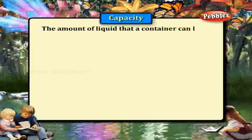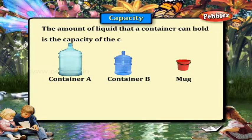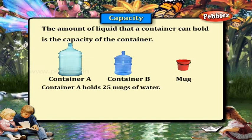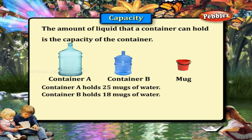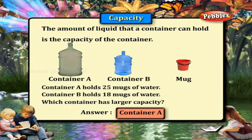The amount of liquid that a container can hold is the capacity of the container. Container A holds 25 mugs of water. Container B holds 18 mugs of water. Which container has the larger capacity? Of course, container A.